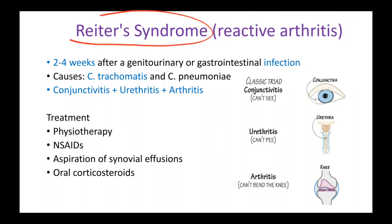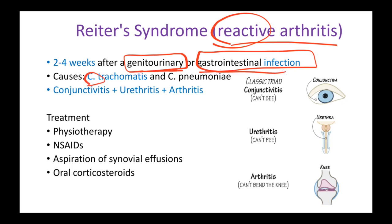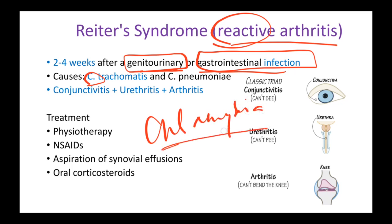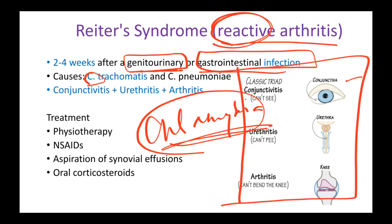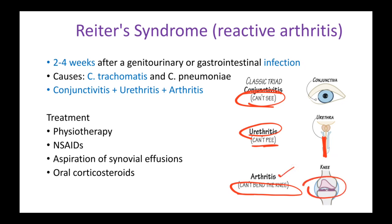Reiter's syndrome, also called reactive arthritis, is called reactive because it occurs as a reaction after the patient has had another infection — genitourinary or gastrointestinal — caused by organisms like Chlamydia. The body reacts to chlamydia infection with a classic triad: conjunctivitis, urethritis, and arthritis. A helpful mnemonic: can't see (conjunctivitis), can't pee (urethritis), can't bend the knee (arthritis).